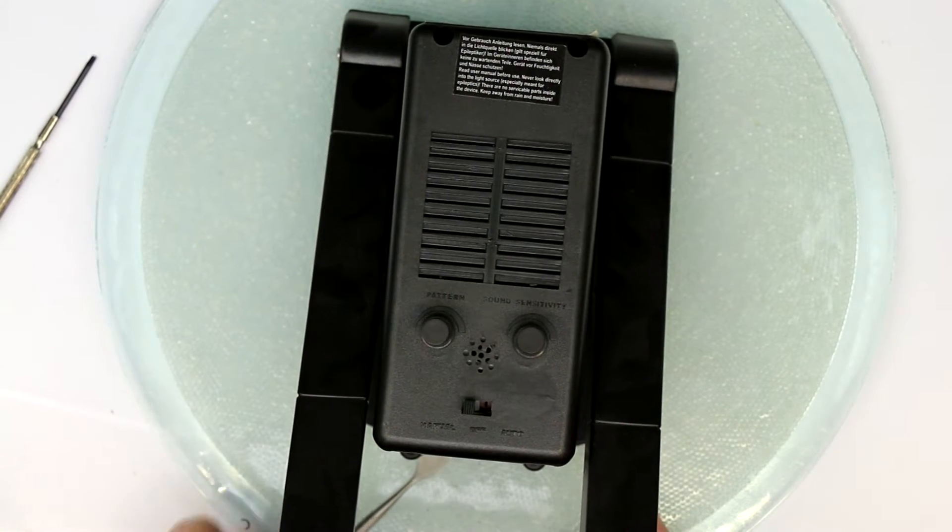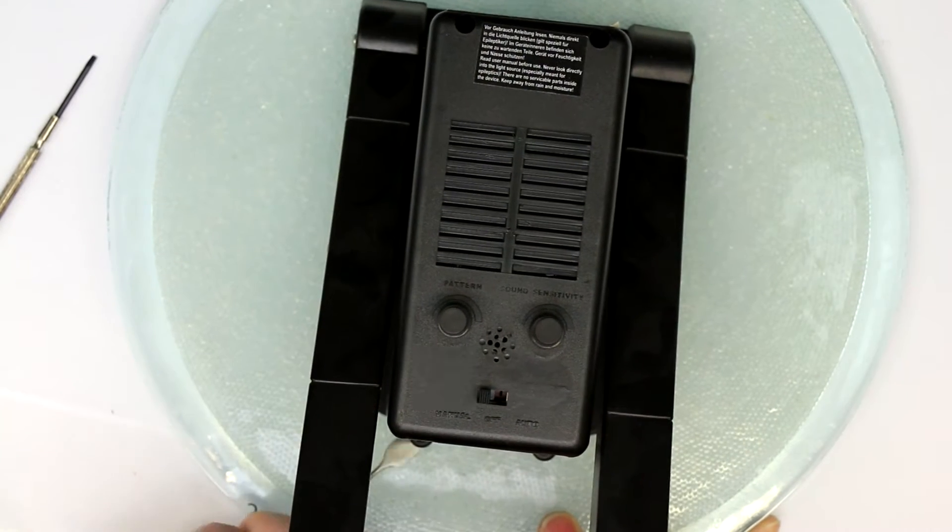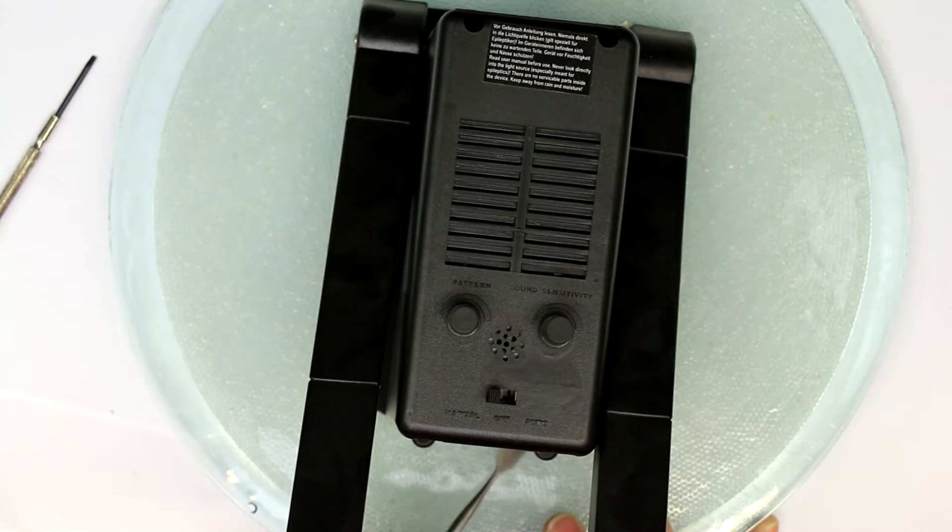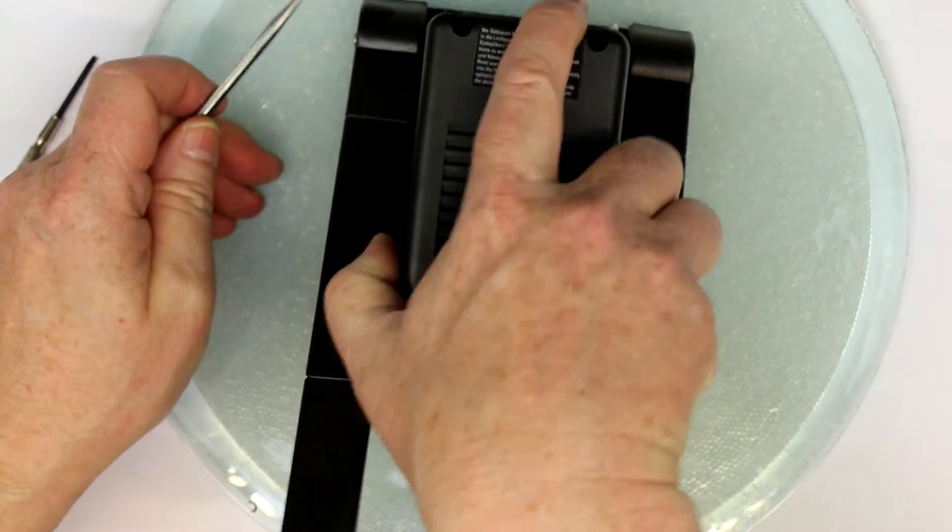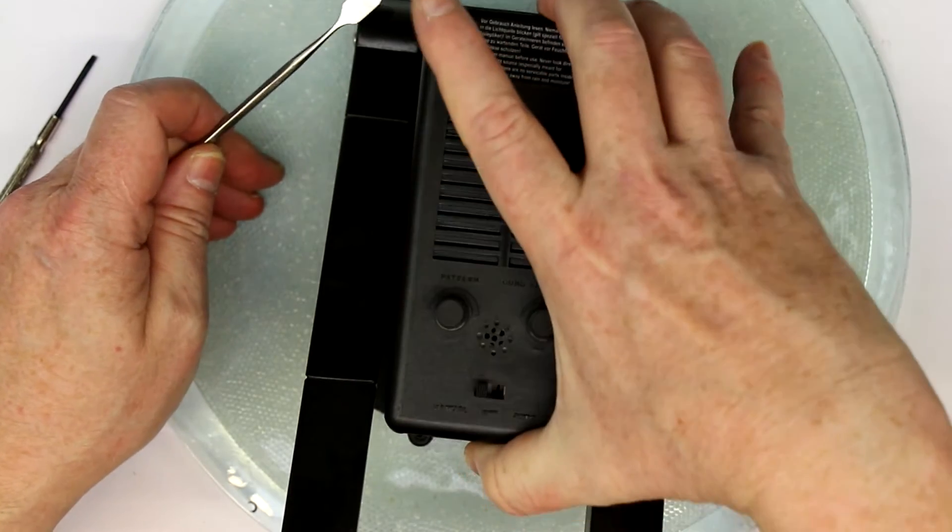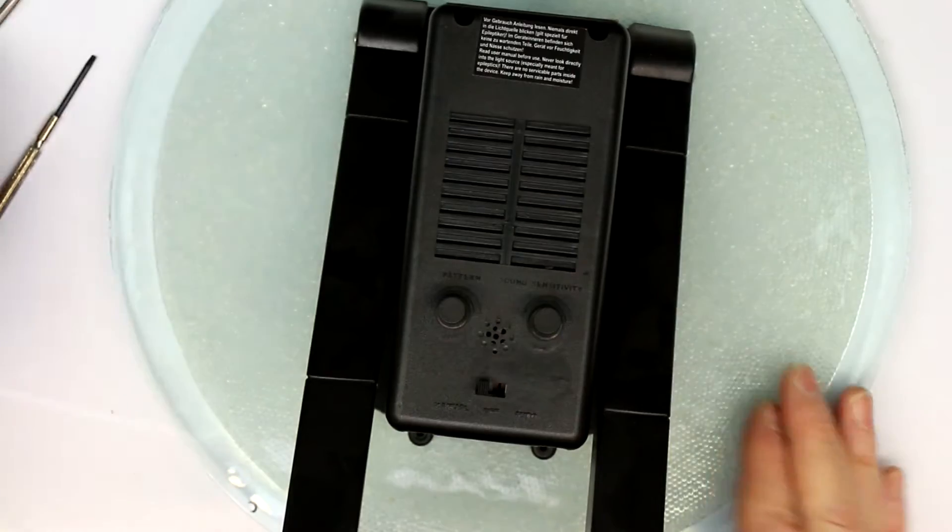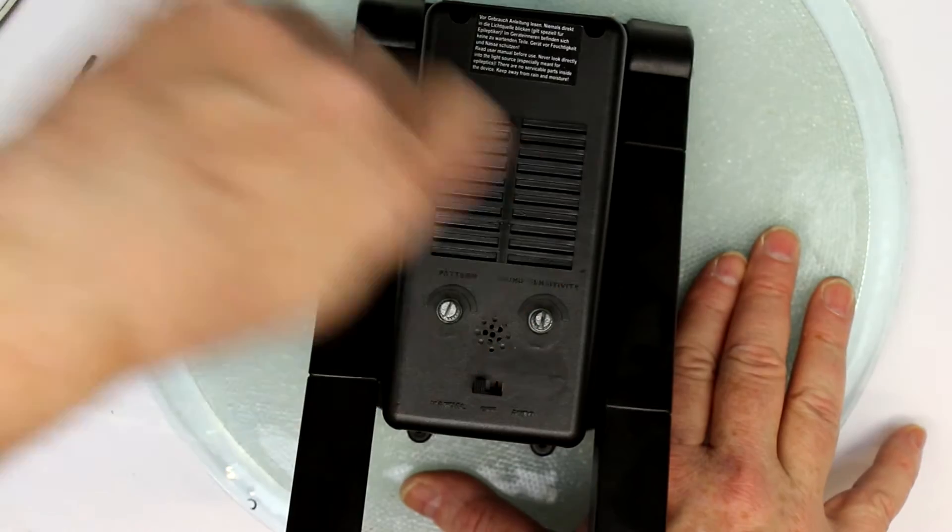Once again, the metal spudgers come in, one of the most useful tools in the lab for taking apart, which by the way is a tool every maker should have, a set of these little metal spudgers, which you can also buy in our shop.